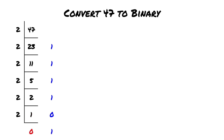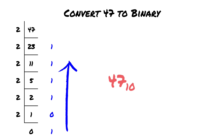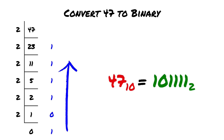And 1 divided by 2 is 0 remainder 1. Reading the remainders from bottom to top, the binary representation of 47 is 1011111.